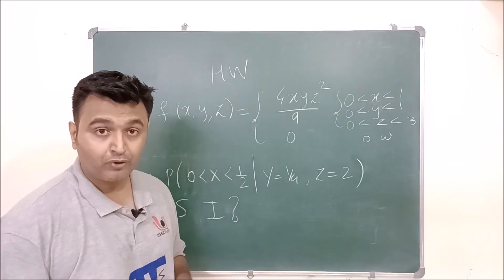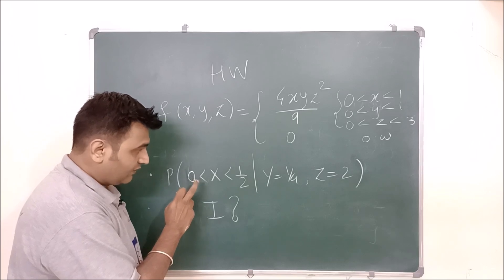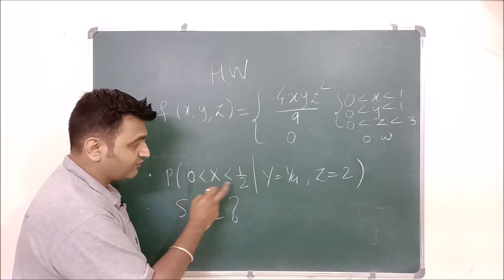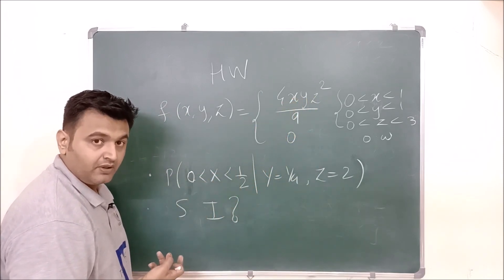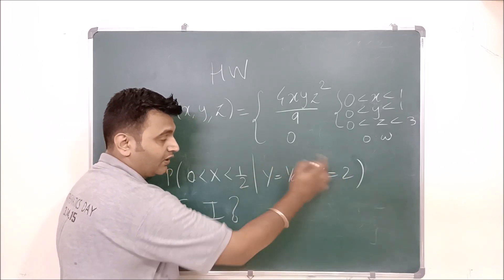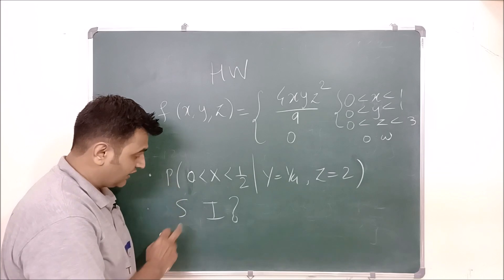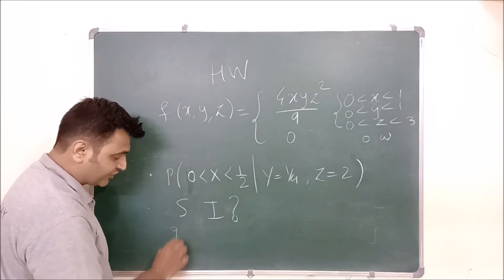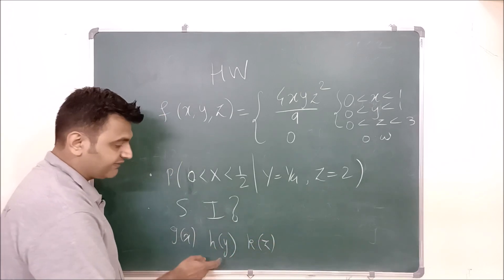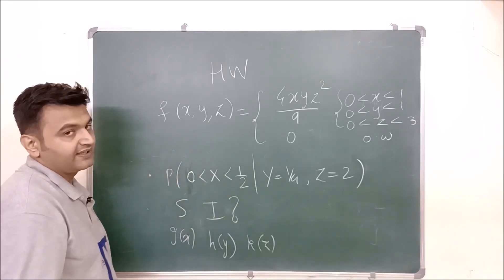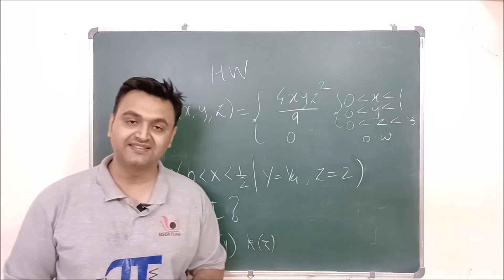Here is a homework problem in three variables. To find the conditional probability, put the fixed values of Y and Z into the joint PDF and integrate X from 0 to 1/2 for the numerator; for the denominator, fix Y and Z and integrate X from 0 to 1. For statistical independence, find the marginal distributions for X, Y, and Z separately, take their product, and check if it equals the joint distribution. Post your answers in the comment section. Thank you.